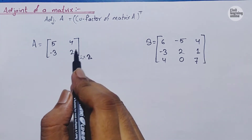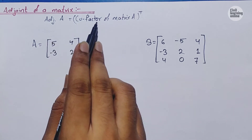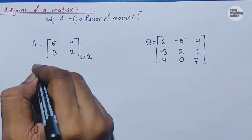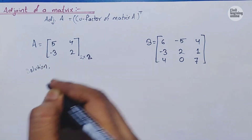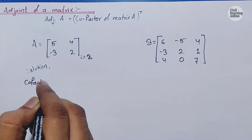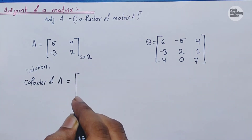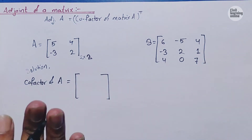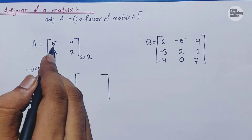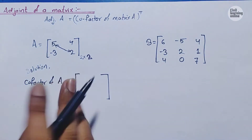Looking at our formula, in order to calculate the adjoint of a matrix we first need to calculate the cofactor of matrix A. For the cofactor of a 2x2 matrix, what we need to do is simply interchange the diagonal elements. These two are our diagonal elements, and we simply need to interchange their positions.